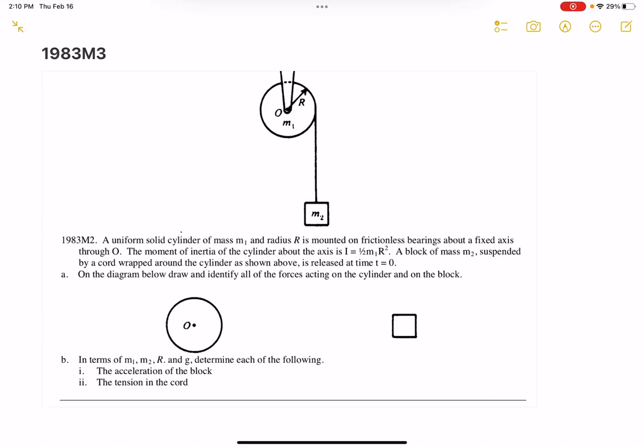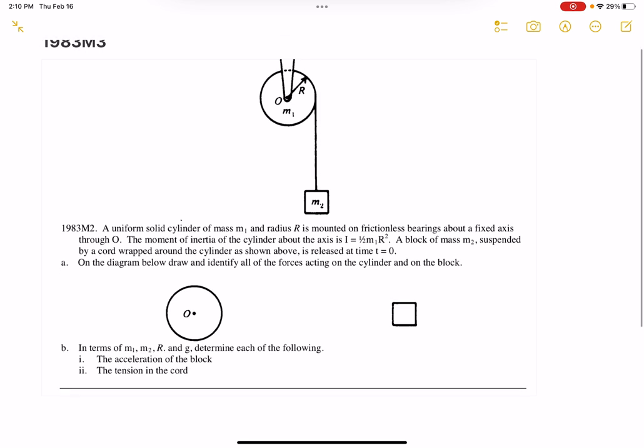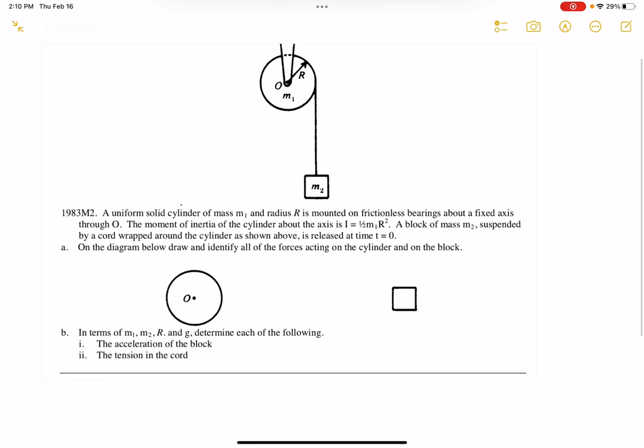Hello, let's look at 1983 Mechanics 3, so M3. So here we have this nice diagram of this disc, uniform solid cylinder, and it's a pulley. It's attached to a rope, and then we have this block that's going to be pulling it down.